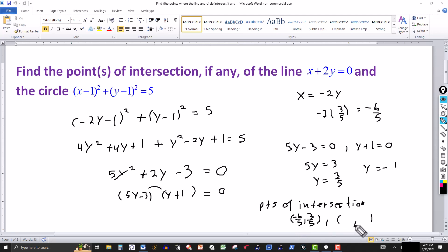And the second point has y coordinate of negative 1. Go back to this equation right here. Put a negative 1 right there. That's 2, negative 1. So the points of intersection then for the line and the circle are (-6/5, 3/5) and (2, -1). These are the points.